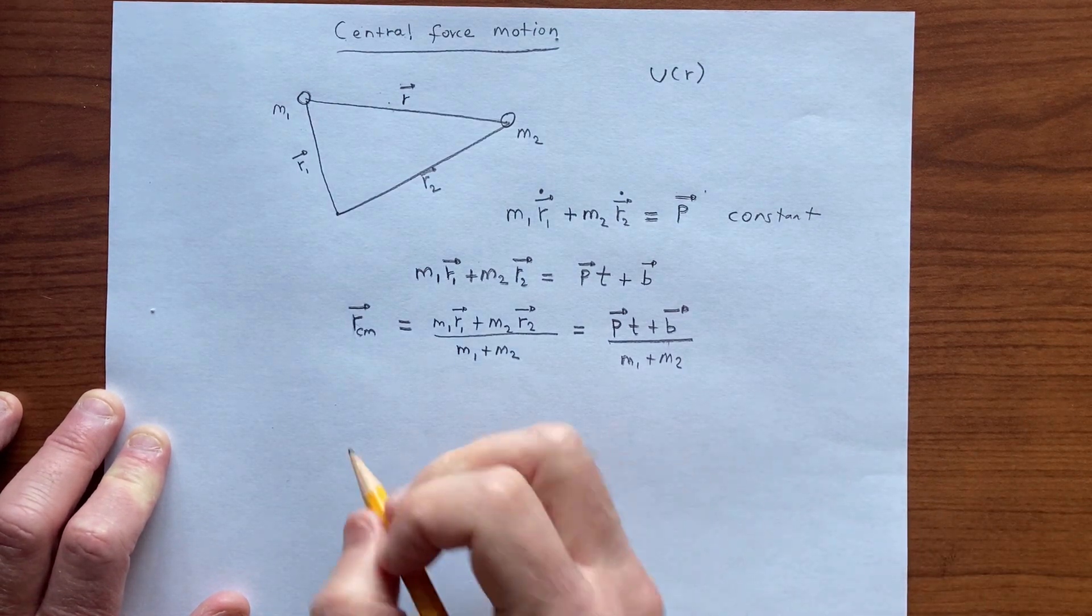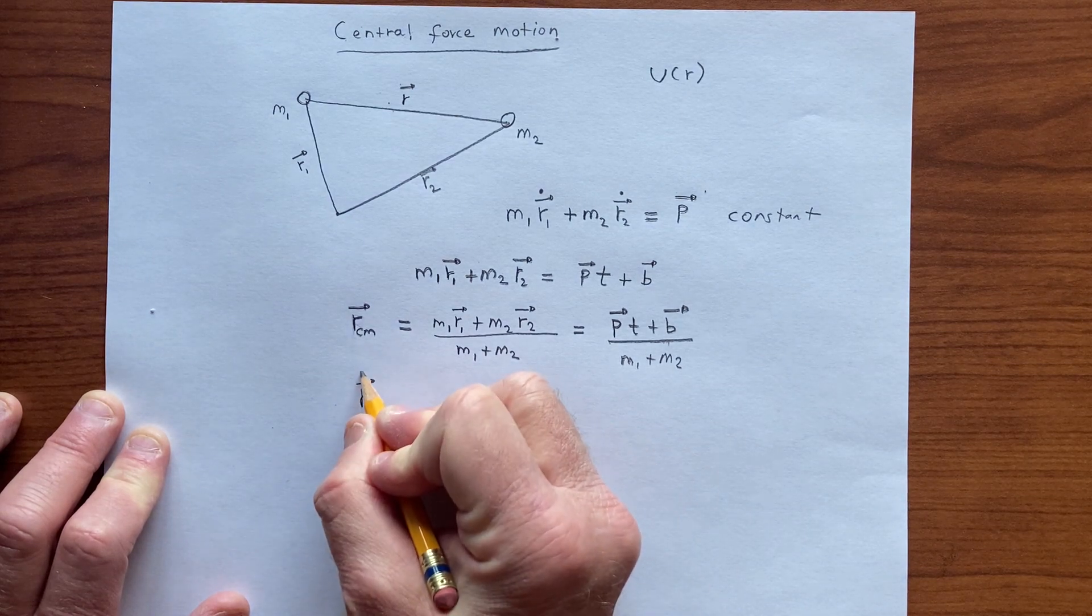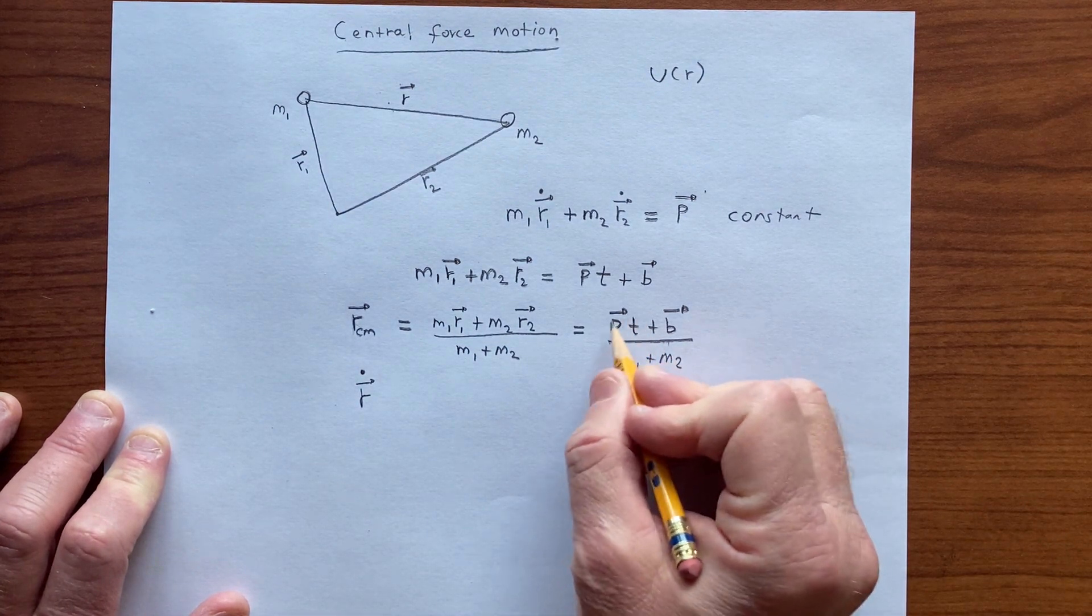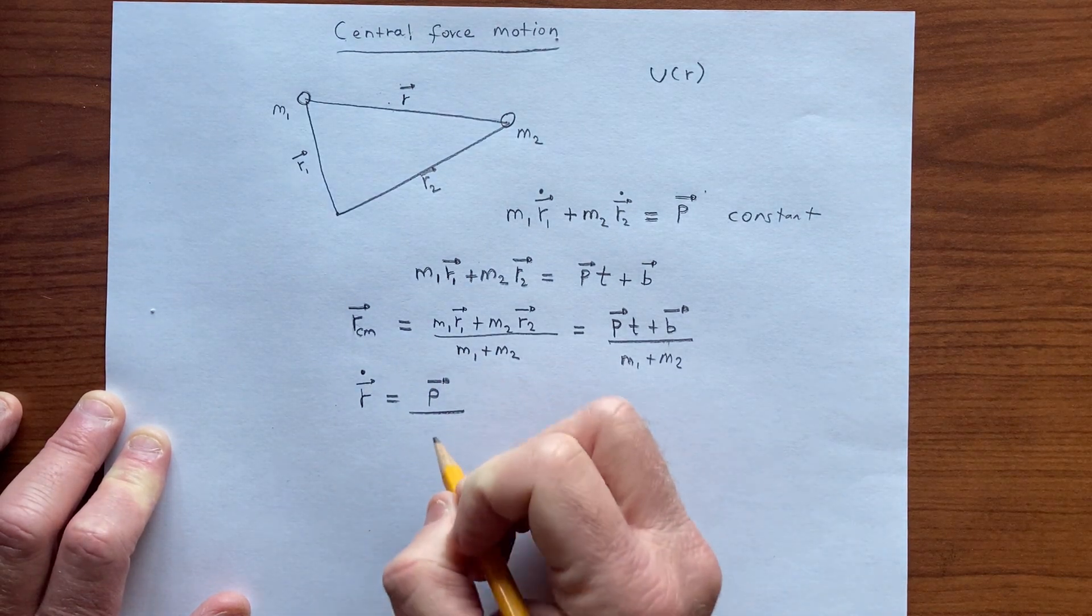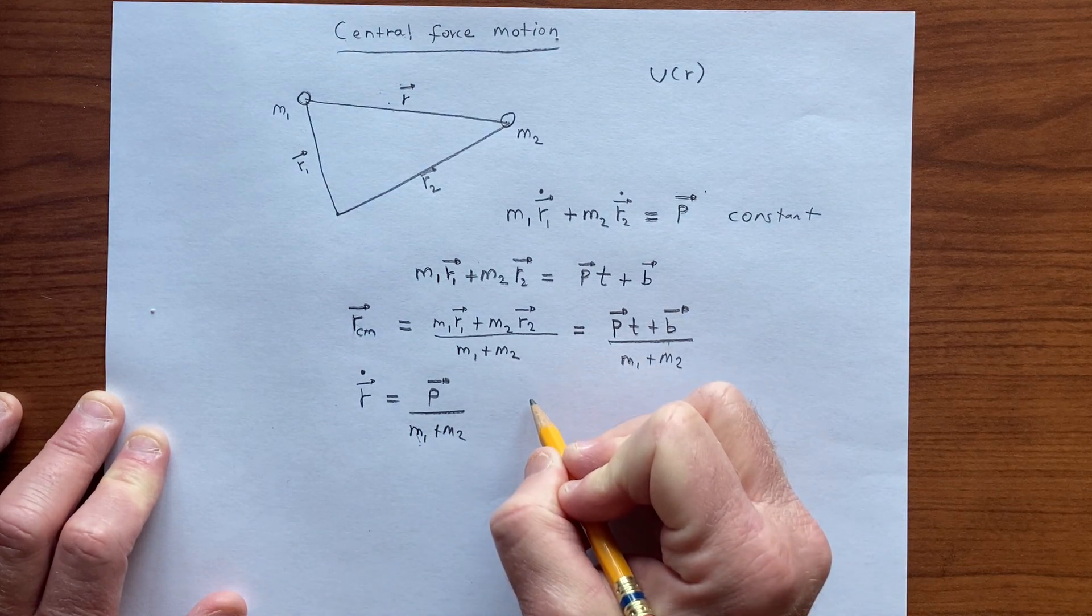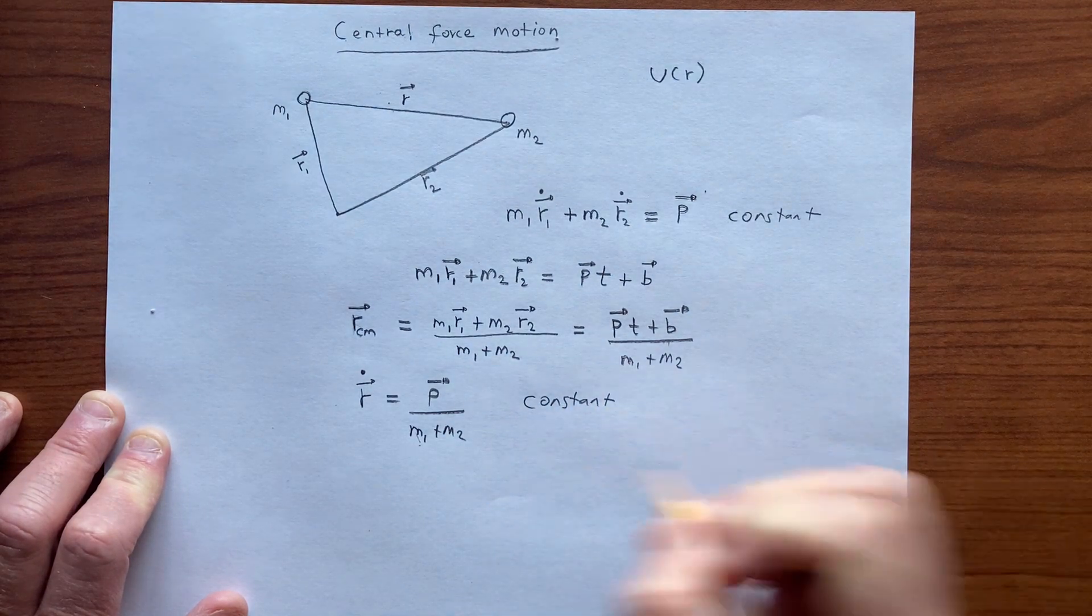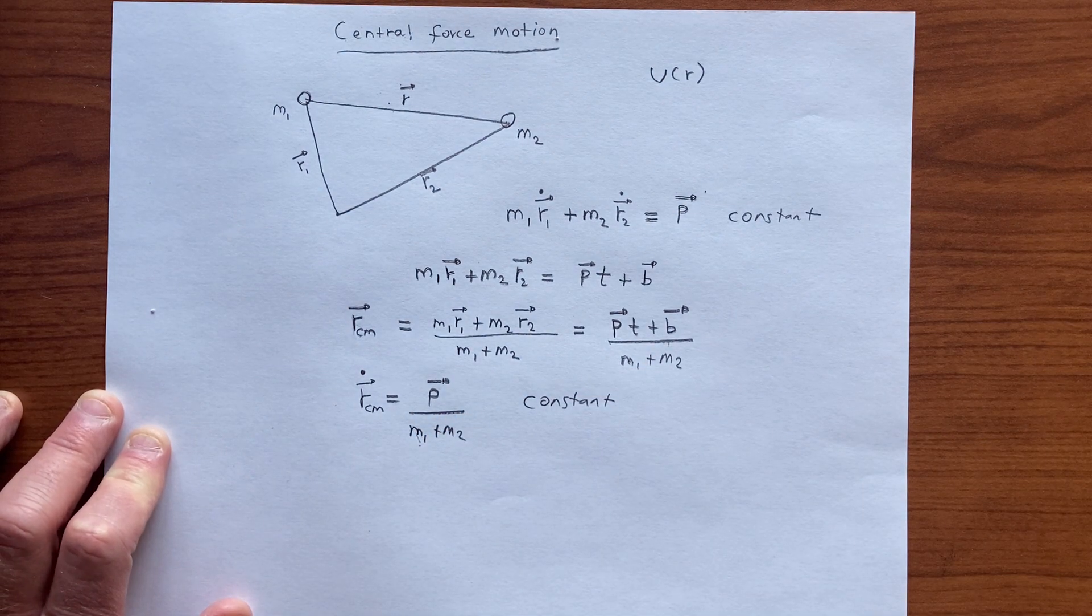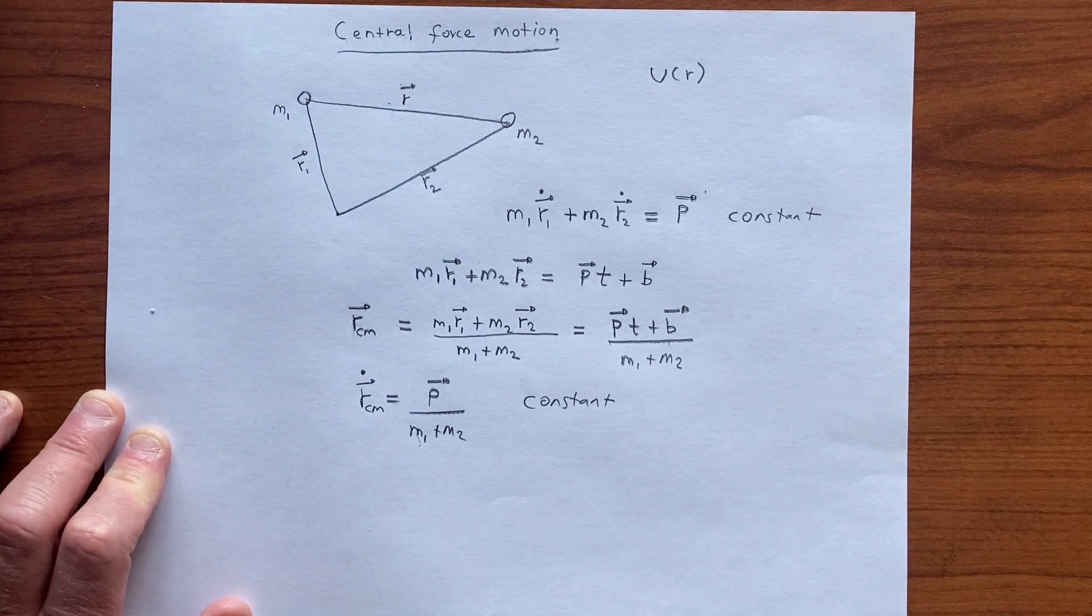And so we find that, let's take the time derivative of the center of mass. It's just going to give us this first term, so it gives us p over the sum of the masses, m1 plus m2, and that is a constant. Sorry, this is rcm dot. So the velocity of the center of mass is a constant in the system where we have central force motion.